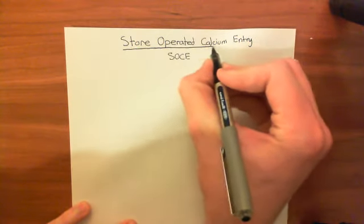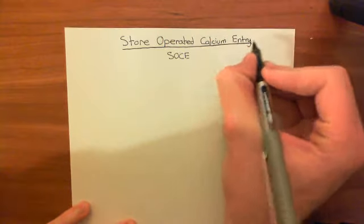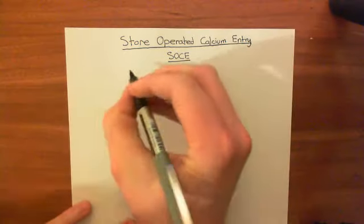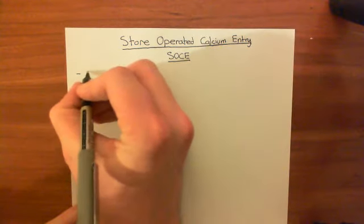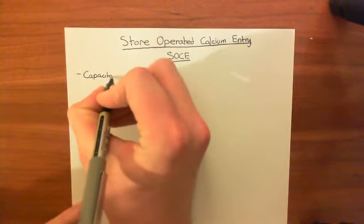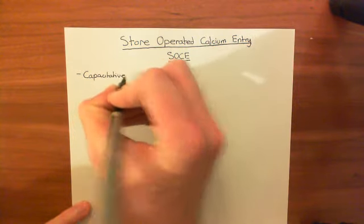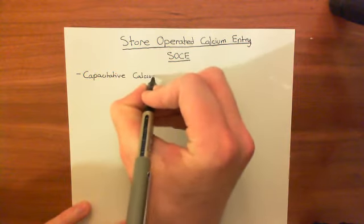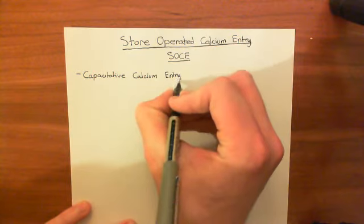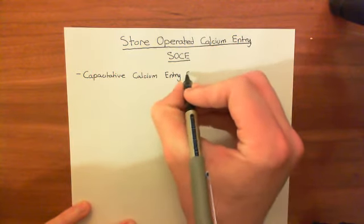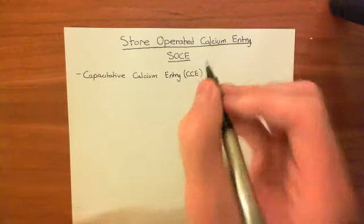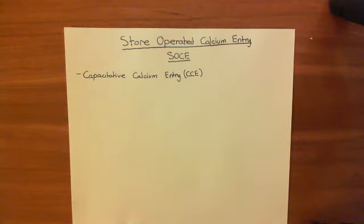Confusingly, there is a whole other name for store-operated calcium entry, which is that it's also known as capacitative calcium entry. That's usually abbreviated to CCE for short. So whenever you hear someone talking about store-operated or capacitative calcium entry, or SOCE, or CCE, it means this.